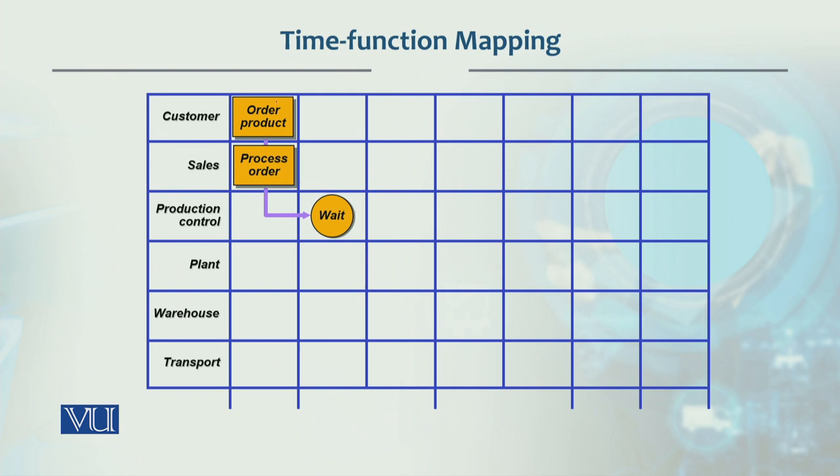To hum ne order product phir process yeh bilkul wohi hai. Production control mein aa kar woh is ne wait kiya and then plant ke andar print kiya, is ke baad hi idhar extrude kiya. Idhar hum ne pehle jo hum ne dekha tha is ke andar plant A mein print kar rahe the phir wait karte the phir plant B ke andar extrude karte the phir wait karte the phir hum transport. Idhar hum ne is ko combine kar diya ek hi plant mein print and extrude ki jo activities hain woh perform kar rahe hain.